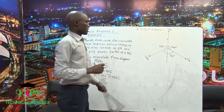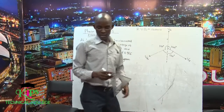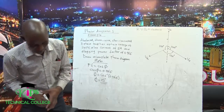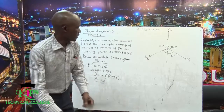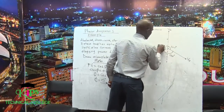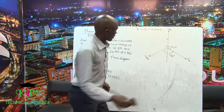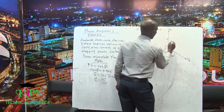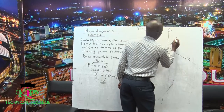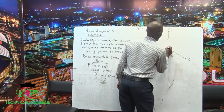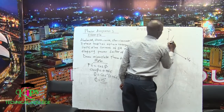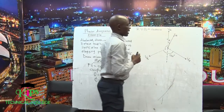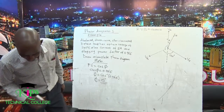After drawing the voltages, we now want to plot the current. The current is lagging behind the voltage by 15 degrees, so you can use your ruler and measure 15 degrees. Let us say this is our IR, and it is lagging VR by 15 degrees. Remember we have been given the magnitude of the current as 5 amperes — this is our 5 amperes drawn there.